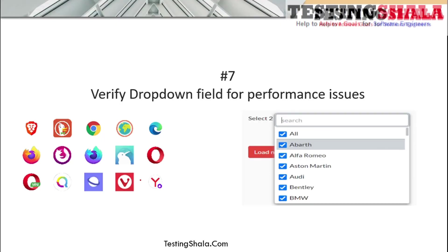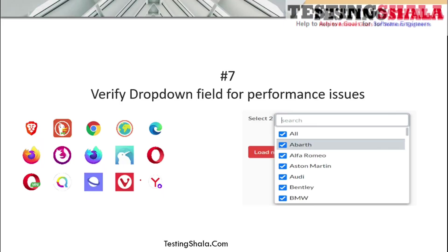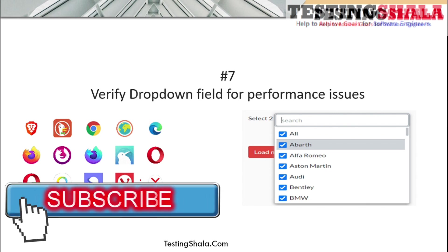Performance-related test cases are also important because dropdowns may have hundreds of values — for example, country names. When this data is pulled from the database, you need to validate whether it loads quickly or takes a long time. You should perform different combinations of performance testing to ensure response time and throughput meet the requirements.